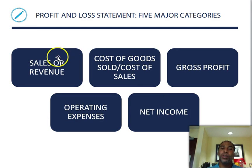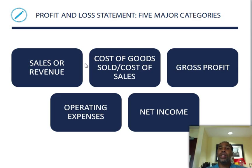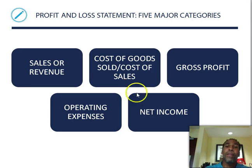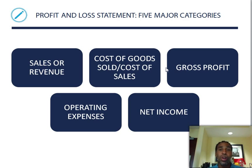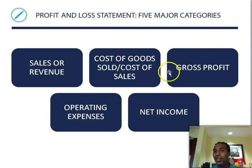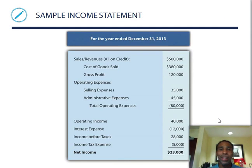The profit and loss statement has five major categories: sales or revenue — how much you sell; cost of goods sold — what you pay to obtain or create goods or pay people who sell them; gross profit — how much you make before taxes and other deductions; operating expenses — the cost of doing business; and net income — how much you actually take home. We always tell people our gross amount, not our take-home pay, but that's just human nature.